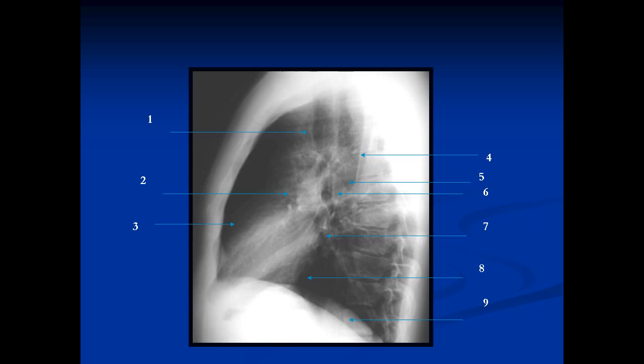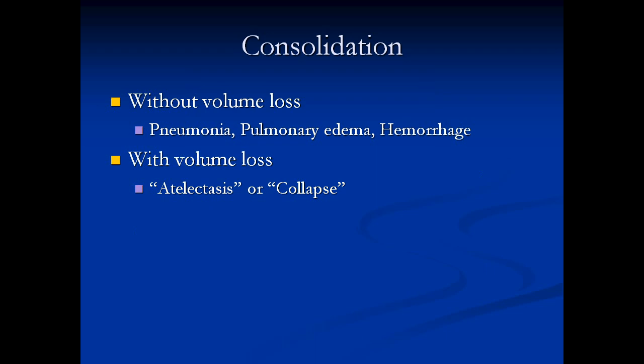Look at the spine as well. If you go down the spine, you'll see that it gets blacker from the top to the bottom — this is normal. When you have an area of consolidation, this will change. Finally, you look at the retrosternal space, which should be uniformly black.